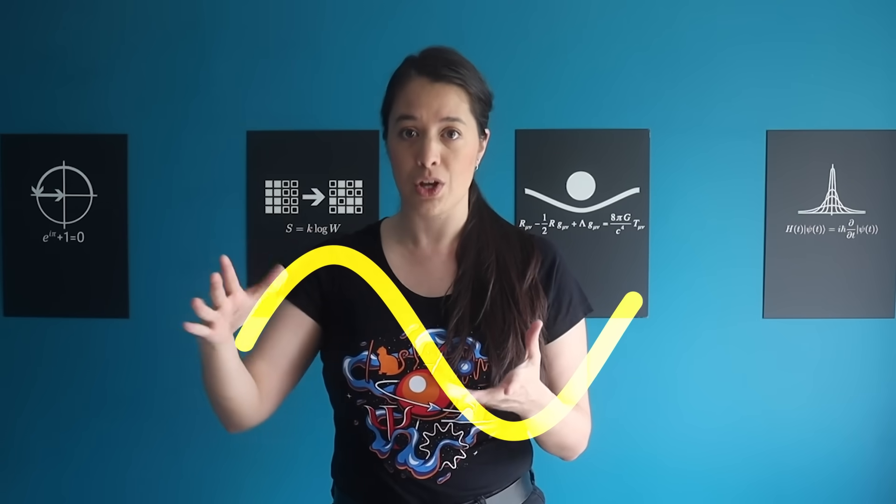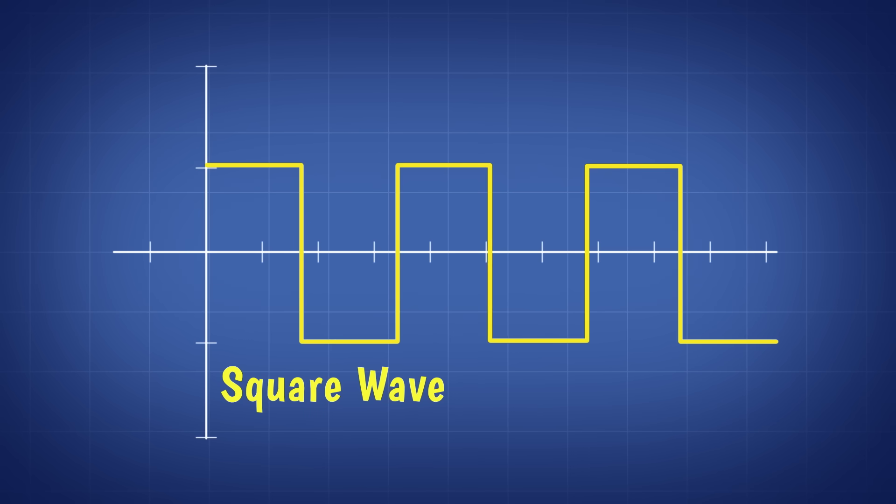If you've never heard of the Fourier series before, you might be skeptical. Can we really write any function in terms of sine and cosine functions? They have a very smooth, wavy shape. So how would you make something like this square wave, which has sharp corners?